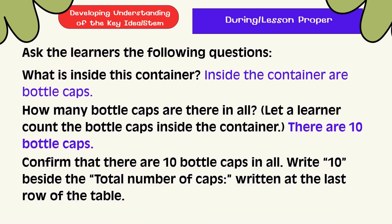Ask the learners: What is inside this container? Inside the container are bottle cups. How many bottle cups are there in all? There are 10 bottle cups. Confirm that there are 10 bottle cups in all. Write 10 beside the total number of cups written at the last row of the table.